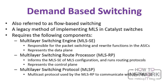Next, let's understand demand-based switching, also referred to as flow-based switching. It is a legacy method of implementing multi-layer switching in Catalyst switches and requires the following components: the multi-layer switching engine, responsible for packet switching and rewrite functions in the ASICs — this represents the data plane; the multi-layer switch route processor, which informs the switching engine of MLS configuration and runs routing protocols — this represents the control plane; and finally the multi-layer switching protocol, a multicast protocol used by the RP to communicate with the SE.